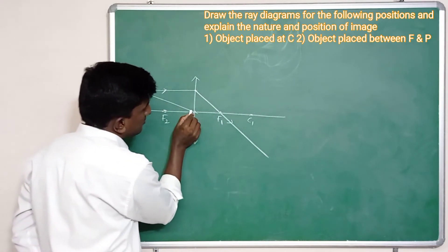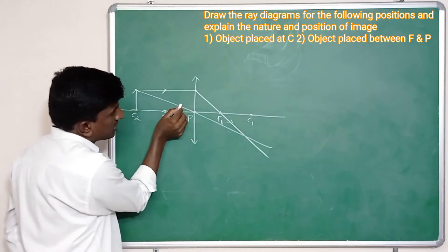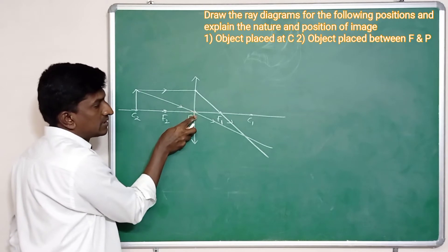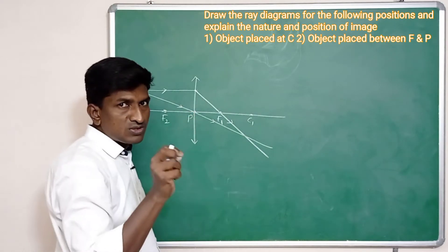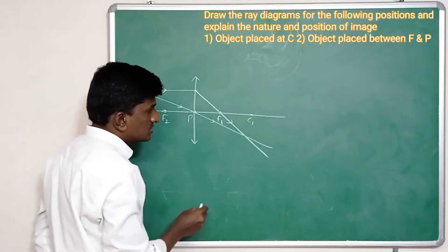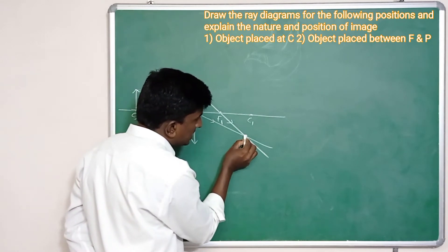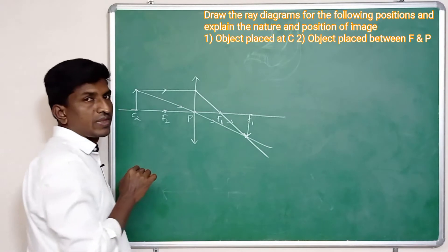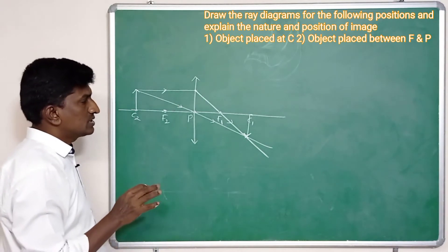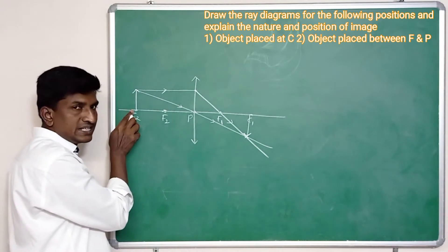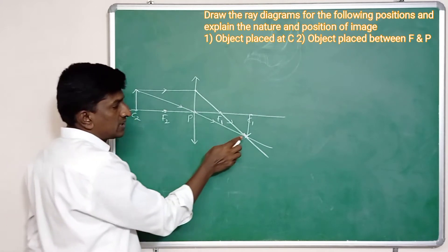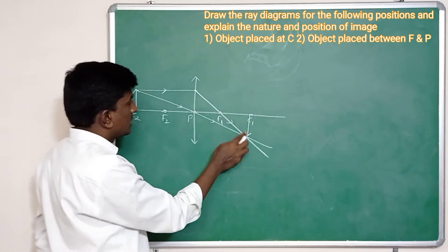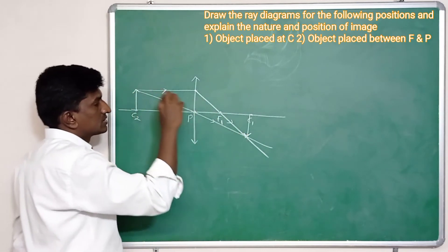The second light ray I am taking passes through the optical center. We know that the light ray passing from the optical center has no deviation — there is no refraction of that light ray. These two light rays are intersecting here, so the image is formed here. From this we can conclude that whenever the object is placed on C, the image is also formed at the center of curvature.